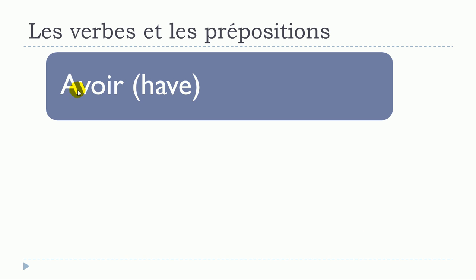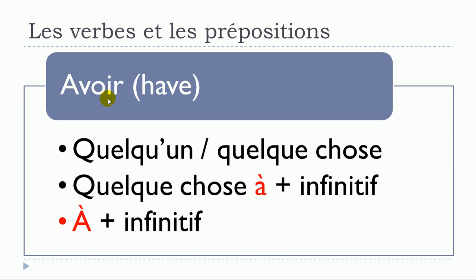We'll start with the first verb and it's quite useful because it's avoir, to have. Let's see the structures that we can make with this verb. The first one is avoir quelqu'un, quelque chose — you can see we don't have any preposition. The second structure would be avoir quelque chose à, and then the verb that will come after should be at the infinitive form: avoir quelque chose à plus infinitif.